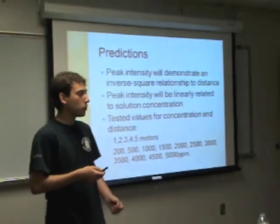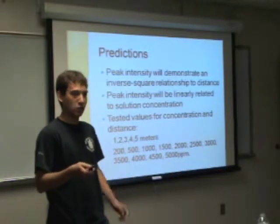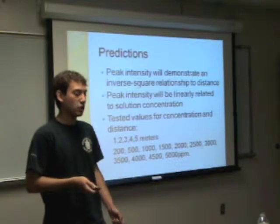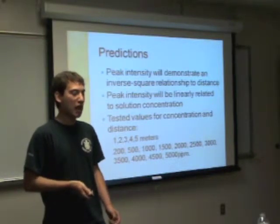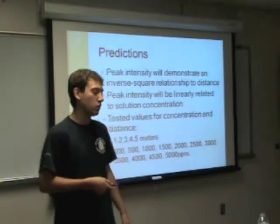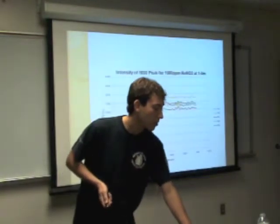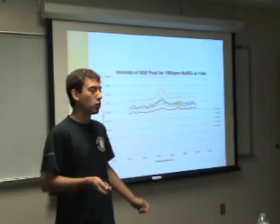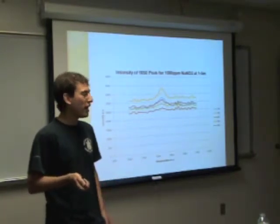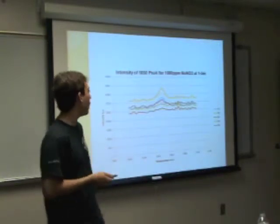As Josh mentioned, we had two predictions: one, that the further you go away, the lower the signal is going to be, with an inverse-squared relationship; and two, that there's going to be a linear relationship between solution concentration and signal strength. The values we tested were one to five meters for distance, and concentration values from 200 to 5,000 parts per million. All the data in this presentation is zoomed in on that nitrate peak. I'll show you graphs — sometimes they were as expected, and sometimes they weren't, and I'll explain why.